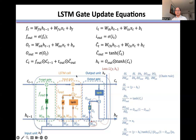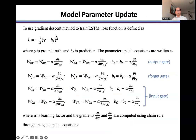We use the gradient descent method to train the LSTM model, so we need to first define the loss function. Here we use the mean squared error as the loss function. Then we calculate the gradient of the loss function with respect to all the model parameters in the output gate, forget gate, and input gate. Our main task is how to calculate this gradient of the loss function with respect to parameters w and b by using the chain rule in back propagation through time.